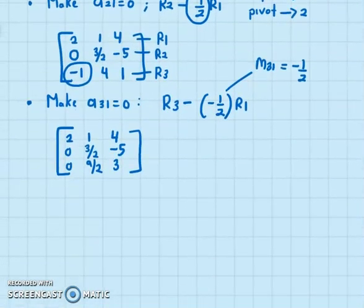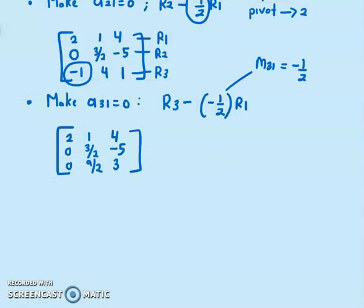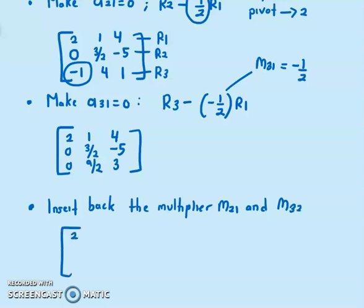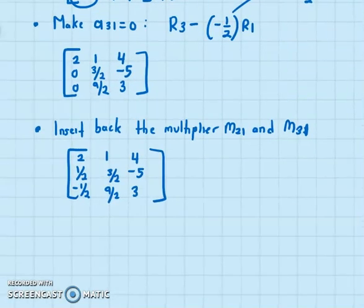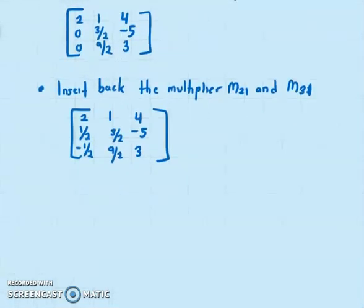Now, we have made this to 0. So, now what we do, we insert back the multiplier M21 and M31 into the new matrix. So, we have half, M21 is half, and M31, this is negative half, 9 over 2 and 3. That's the operation for the first column. This is what we did. We just look at the first column.